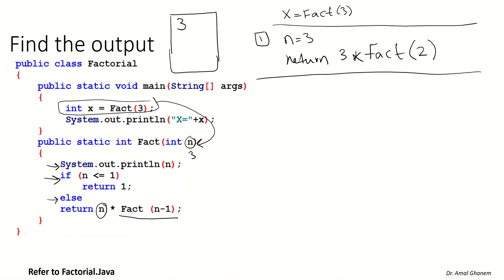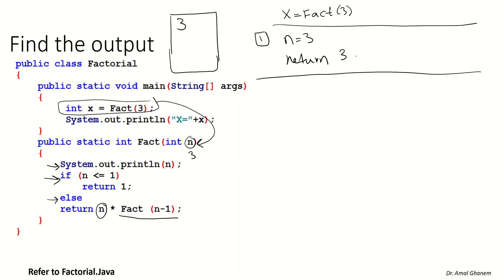We don't have an exact number yet. If it just said return 3, then 3 would be the result. But instead we are saying return 3 multiplied by fact(2). So we still need to find the value of fact(2), and from that we can determine the final result.